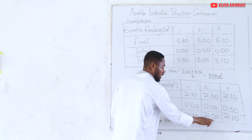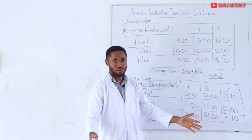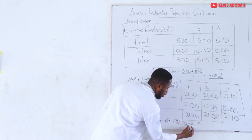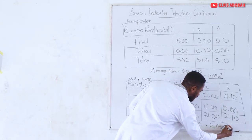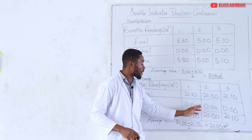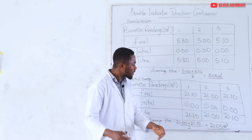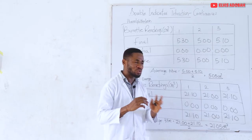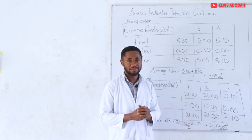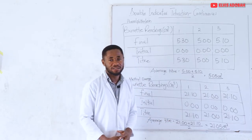I'm choosing the second and third values — 21.00 and 21.10 — because they are the closest with a difference of 0.00 effectively. So my average will be (21.00 + 21.10) ÷ 2 = 21.05 cm³. If the third value had been something like 21.50, I would have resorted to the first two. So I now have the average titre for phenolphthalein and the average titre for methyl orange.